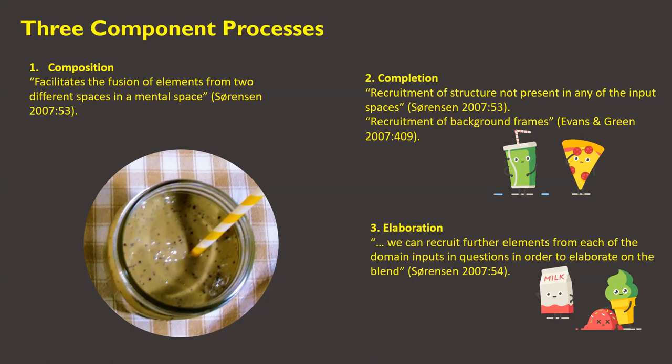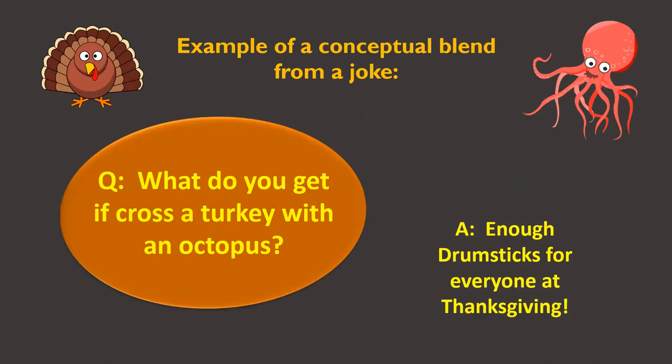And that is really the basics for doing your integration network. But now question two in your assignment is to look at an integration network for a kind of joke where blending comes into play to create the humor. The humor is what emerges. The example in your book is: what do you get if you cross a kangaroo with an elephant? The answer is holes all over Australia. We are presenting a similar one. Our conceptual blend joke is: what do you get if you cross a turkey with an octopus? The answer is enough drumsticks for everyone at Thanksgiving.